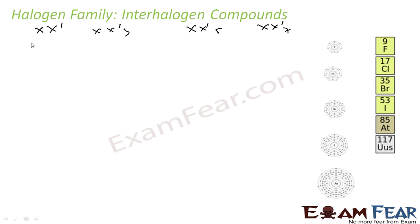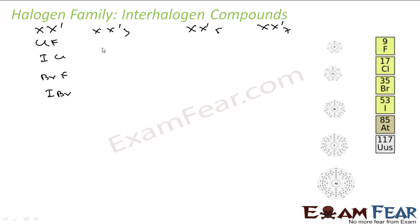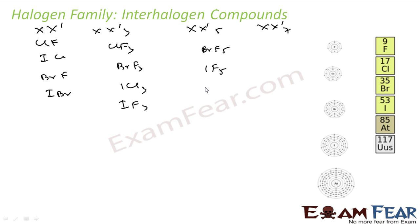For XX', we have options: ClF, ICl, BrF, IBr. For XX'3, we have ClF3, BrF3, ICl3, IF3. For XX'5, the examples are BrF5, IF5, ClF5. For XX'7, the only example is IF7.